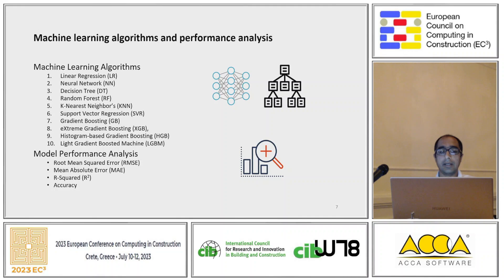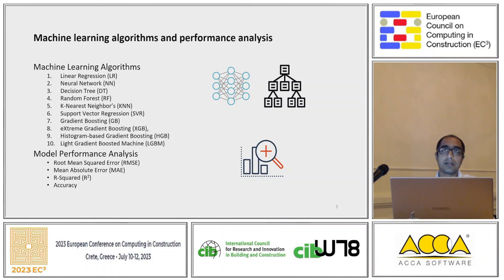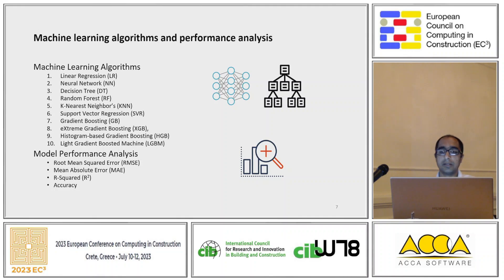We tested 10 algorithms, including gradient boost and its different variations. To evaluate model performance, we use root mean square error (RMSE) and R-squared, since this is a regression problem. We also use energy rating classification to check the overall building energy rating.